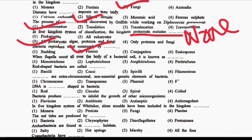When flagella occur all over the body of a bacterial cell, then it is known as DASH. Option 1: Monotrichous. Option 2: Lopotrichous. Option 3: Amphitrichous. Option 4: Peritrichous. The correct answer is Peritrichous.